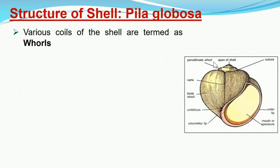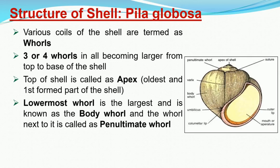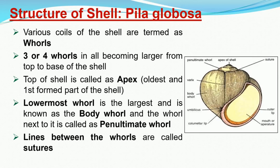Below the apex is a slightly larger whorl known as the penultimate whorl, which is followed by the largest whorl called the body whorl. Most of the body of Pila is enclosed inside this body whorl. In between the whorls you can see lines called sutures. Internally, all the whorls freely communicate with one another — there is no partition between them, so the body whorl communicates with the penultimate whorl and the penultimate whorl with the apex whorl.